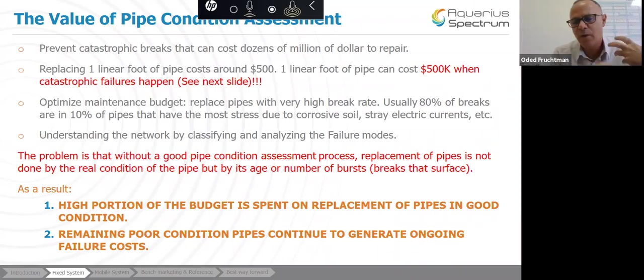Sometimes it will be just you can fix the leak, sometimes it will replace, you need to replace the whole pipe, sometimes it's just a specific section, and sometimes you'll need to do cathodic protection or other method to maintain the health of the pipe, so it's important to analyze those failure modes. The problem is that without good pipe condition assessment process, replacement is not done by real condition of the pipe, but rather by age or number of bursts. When I mean bursts, I mean breaks that actually go up to the surface. As a result, high portion of the budget is spent on replacement of pipes in good condition, and remaining poor condition pipes continue to generate ongoing failure costs.